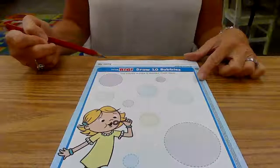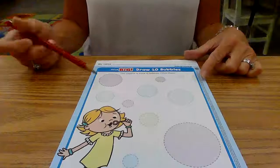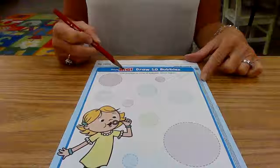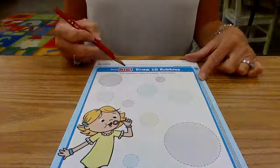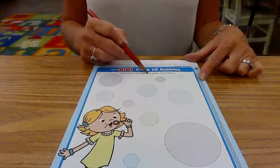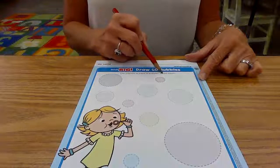And on the back page of our Scholastic, it says, think big, draw 10 bubbles. Use a crayon to trace 10 bubbles, count them.